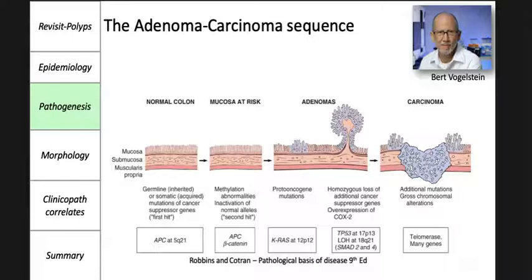CRC provides a classic paradigm for relating genetic changes to morphological progression — the adenoma-carcinoma sequence. This model was first proposed by Fearon and Vogelstein in the late 1980s and has been modified over the years, serving as a model for carcinogenesis for various other tumors. This is a concept, not a template, and it evolves as understanding grows. Important genes include APC, beta-catenin, p53, and telomerase, which were discussed in the chapter of neoplasia in basic pathology.